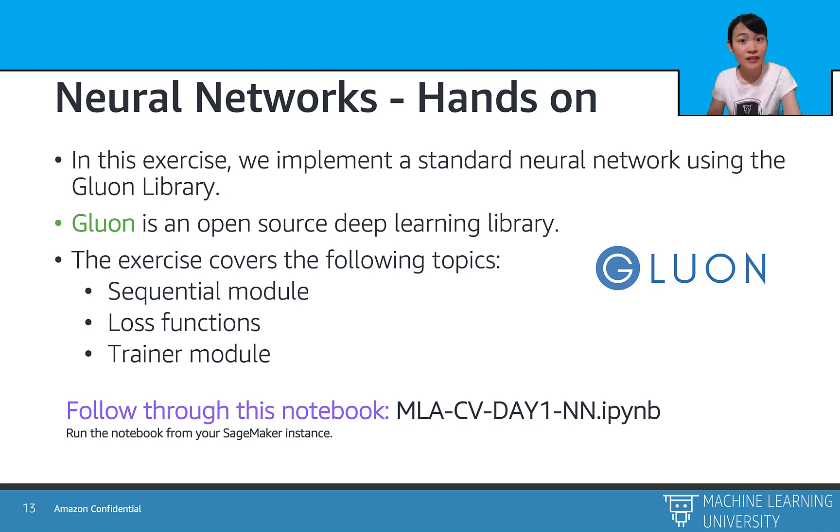Now we have a full understanding of how neural networks work. Let's get down to writing the code of a standard neural network. We will use the Gluon library, which is an open source deep learning library that has most of the commonly used built-in operators, such as the cost functions, the forward propagations, and the backward propagation techniques. So we can then go ahead and call the built-in operators directly without coding from scratch. And now, let's open the Jupyter Notebook MLA-CV day one, neural networks.